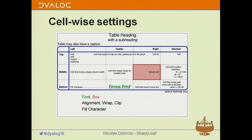Then you have cell-wise settings, which can be defined as row-wise cycles, column-wise cycles, or a matrix that tiles the whole table. The settings down to the cell include the font with all settings we've seen, a box for special cells, alignment — you can see examples of left, center, right, and decimal alignment — where you have control over the decimal character and it does the alignment for you.